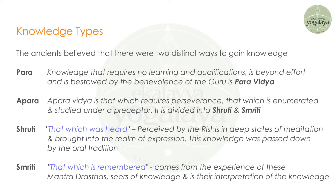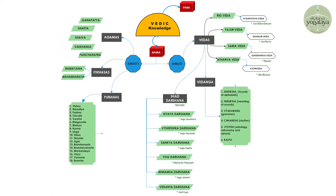Shruti is that which was heard or received by the Rishis in deep stages of meditation and brought into the realm of expression. This knowledge was passed down through oral tradition — it is the downloaded knowledge from the cosmos, from the consciousness. Smriti is that which is remembered, coming from the experience of these mantra-drashtas, seers of knowledge, and is their interpretation of that knowledge.